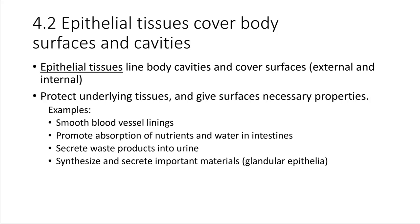Some examples of epithelial tissues, other than skin — we'll be revisiting skin later in this chapter — would be the lining inside of blood vessels. The surface inside a blood vessel needs to be very smooth. If it was rough, that would disrupt blood flow, but a very smooth layer of epithelial tissue allows blood flow to proceed smoothly without a lot of turbulence.